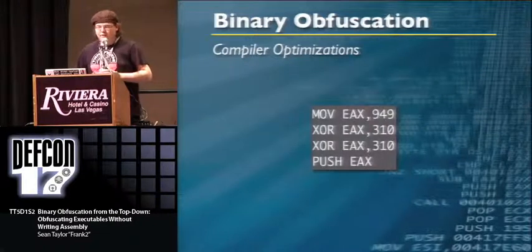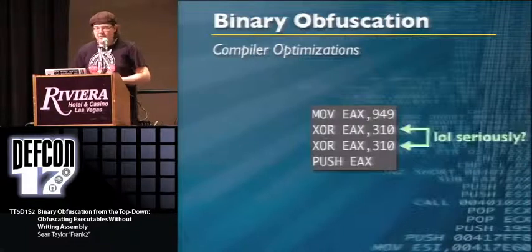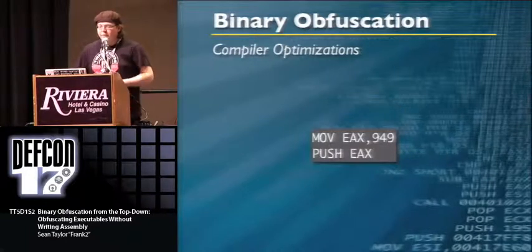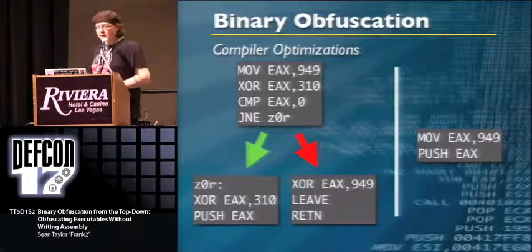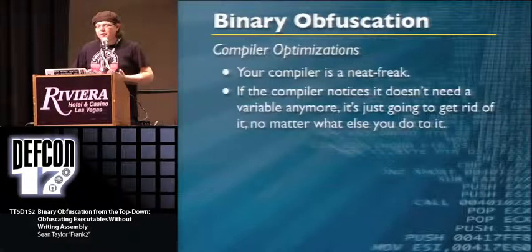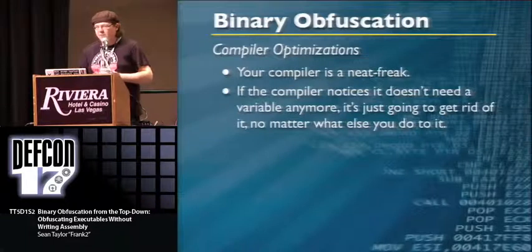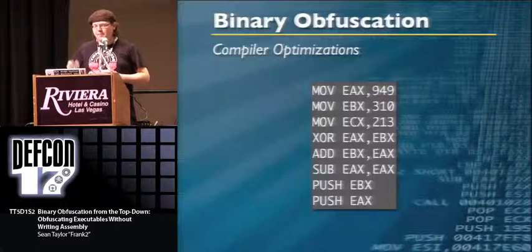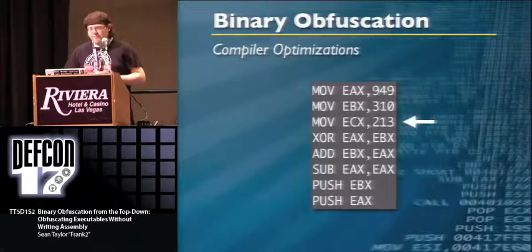Going back to the earlier example: even the optimized version has a problem, because the XOR operation inverts itself and comes back to 949. So the compiler turns all those lines back into just two lines. The compiler also has OCD about variables — unused variables get completely tossed aside. For example: EAX is 949, EBX is 310, ECX is 213 — but if ECX never gets used in the math, the compiler removes it.